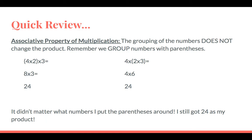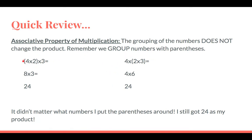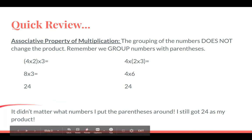It doesn't matter which numbers my parentheses are around — my product is going to be the same. Here I have 4 times 2 times 3 on both sides. On the left, parentheses are around 4 times 2: 4 times 2 is 8, and 8 times 3 is 24. On the right, parentheses are around 2 times 3: 2 times 3 is 6, and 4 times 6 is 24. Both sides give 24.